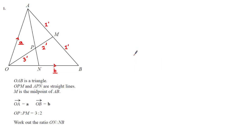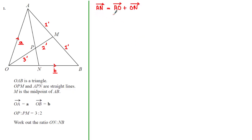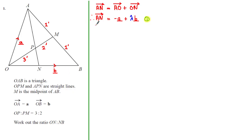We're going to work out the ratio by finding different ways of expressing the focus vector AN. One way is to go from A to O then O to N, giving us: AN = AO + ON. Since the vector OA equals a, the vector AO equals −a. Because O, N and B lie on the same straight line, we can write the vector ON as λb, where λ is a positive scalar. Therefore AN = −a + λb, which we label as our first vector equation.